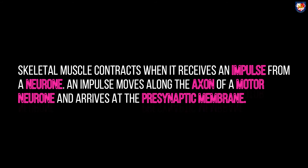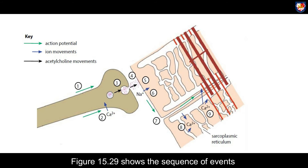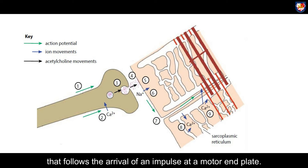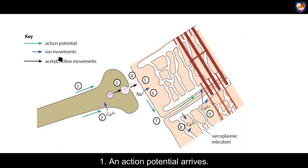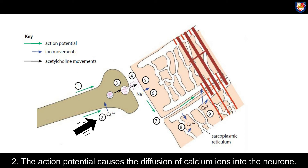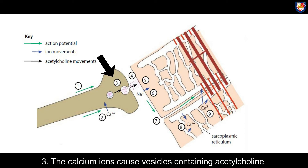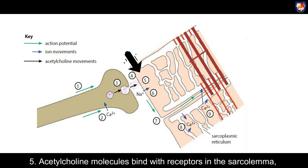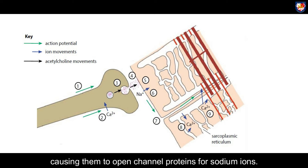Skeletal muscle contracts when it receives an impulse from a neuron. An impulse moves along the axon of the motor neuron and arrives at the presynaptic membrane. Figure 15.29 shows the sequence of events that follows the arrival of the impulse at a motor end plate. First, an action potential arrives. Second, the action potential causes calcium ions to diffuse into the neuron. Third, the calcium ions cause vesicles containing acetylcholine to fuse with the presynaptic membrane. Fourth, acetylcholine is released and diffuses across the synaptic cleft.